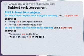Rule nine — plural form subjects with a singular meaning take a singular verb. Examples: mumps is a contagious disease; politics is an interesting subject. Plural form subjects with a plural meaning take a plural verb. Examples: the scissors are on the table; the pair of scissors is on the table.